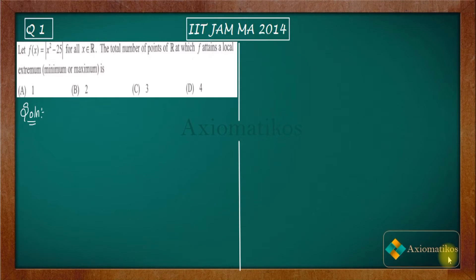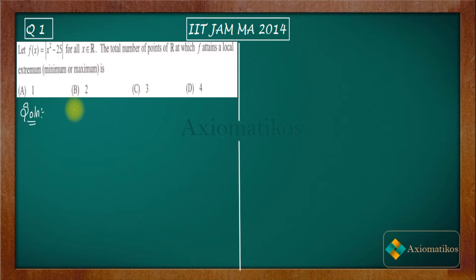Hello dear students, welcome to Axiomatic course. This video is part of the solution series for IIT JAM 2014. We are here with problem one from your paper — an analysis problem. Let us have a look: f(x) = |x² - 25| for all x belonging to ℝ. The total number of points in ℝ at which f attains a local extremum is to be determined. These are your options.